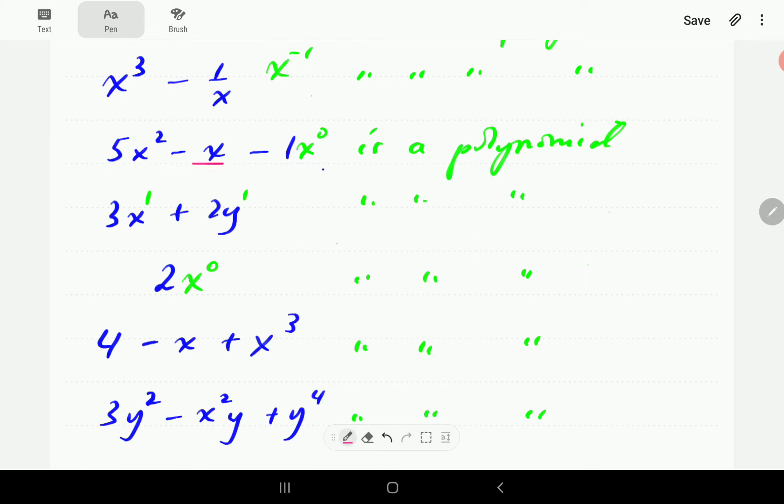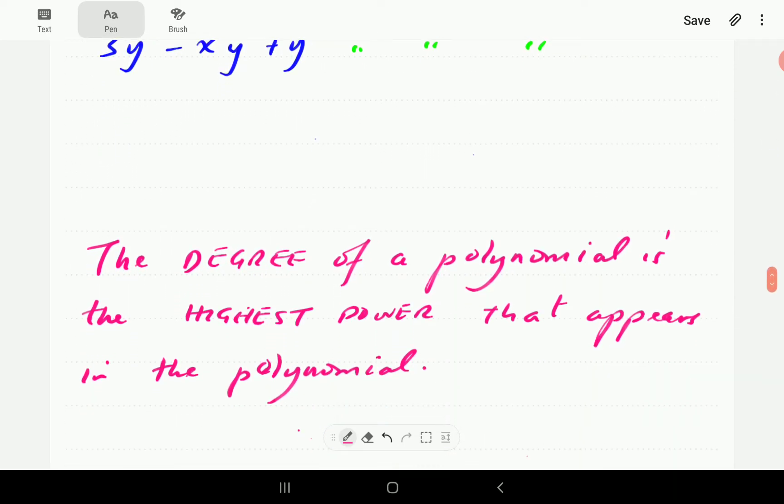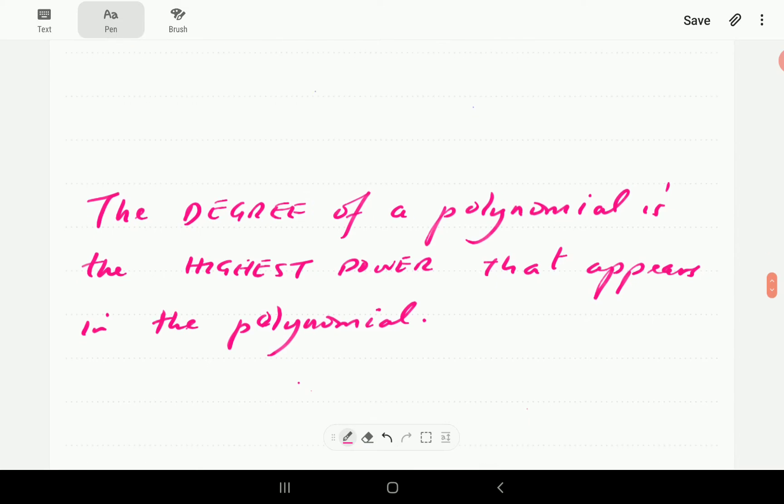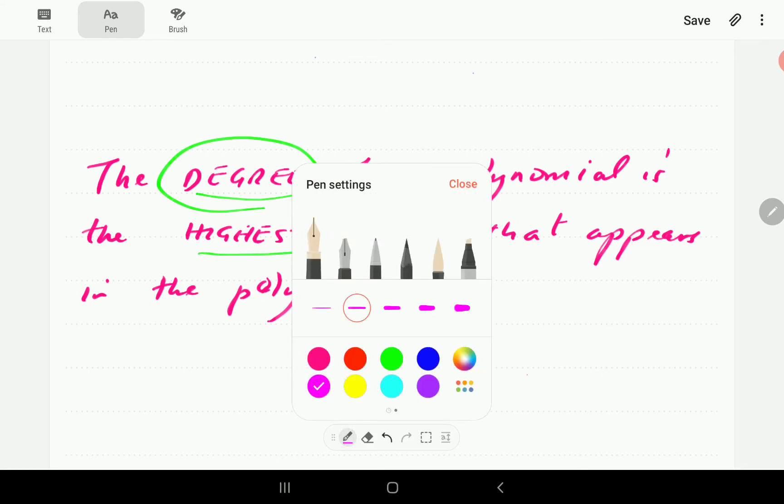So for instance, the one feature of a polynomial that we're going to talk about is the degree of a polynomial. So the degree of a polynomial is the highest power that appears in that polynomial. So that then is the degree of a polynomial.